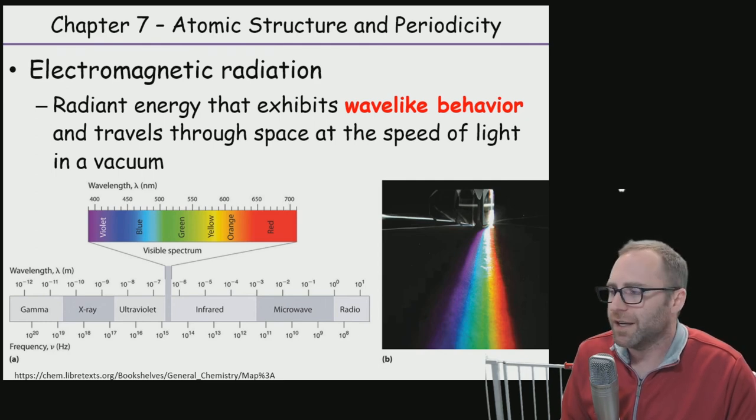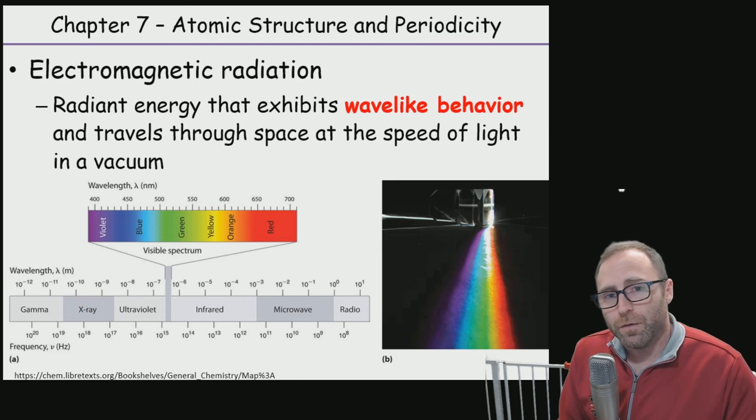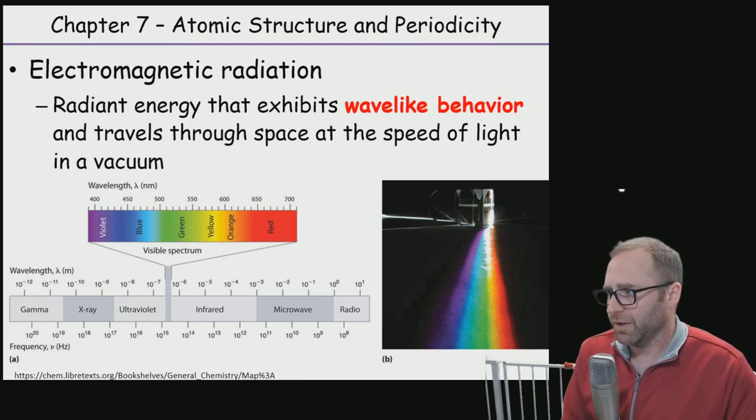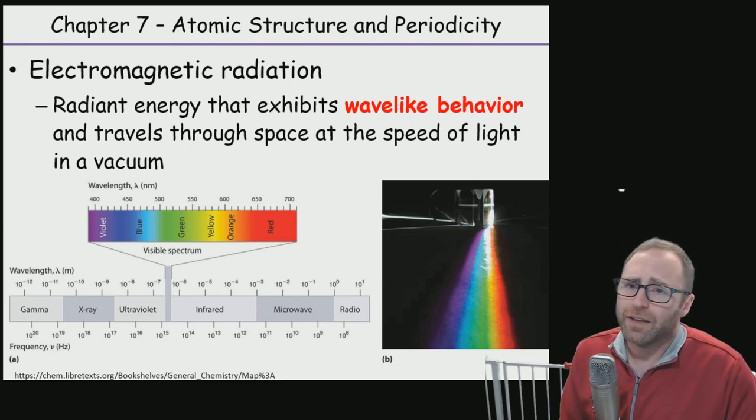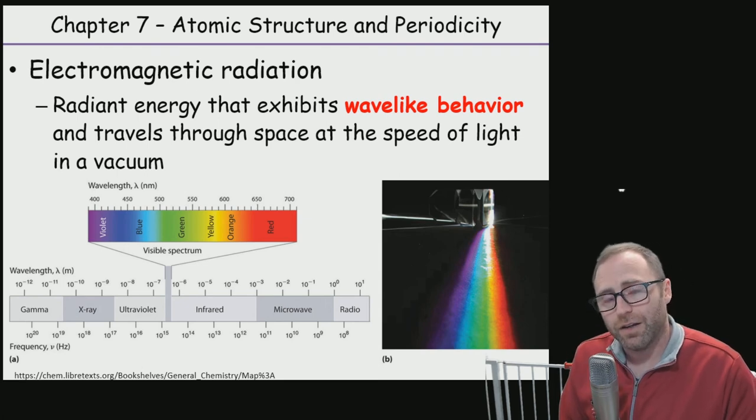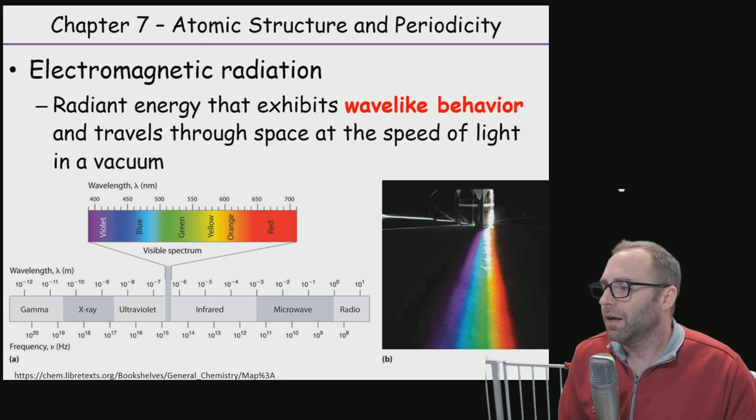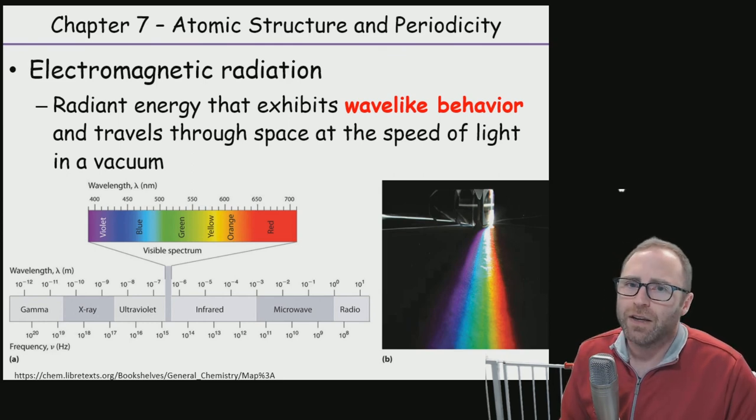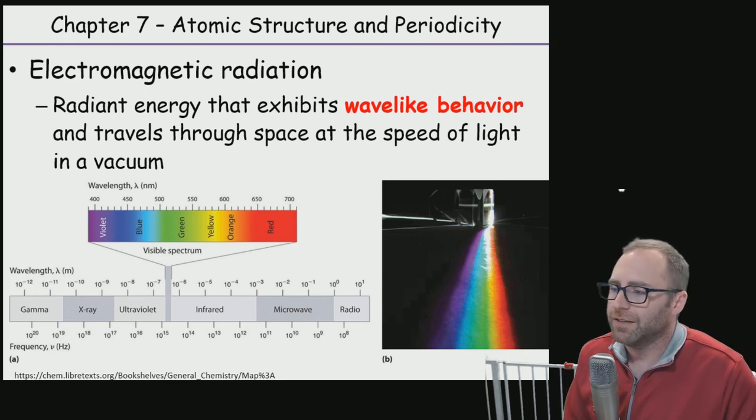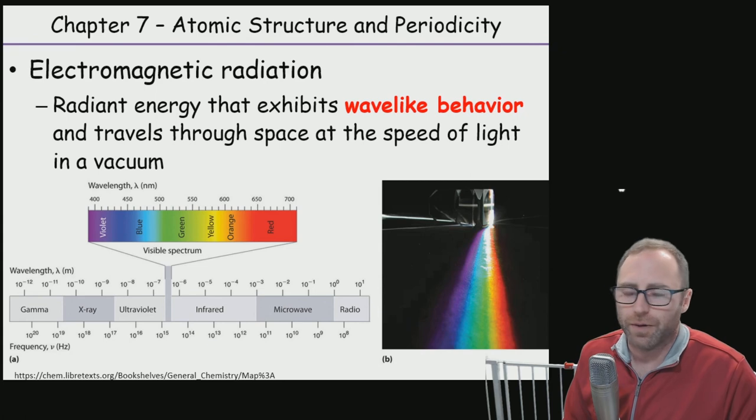Within visible radiation, you have these ROYGBIV designations - the red, orange, green, yellow, blue, indigo, violet kind of stuff. Violet is right up next to the ultraviolet on the spectrum, and red is near the infrared. The image here that we've got is white light being shown through a prism. If you take white light and hit it with a prism, you can actually diffract all the different colors in the rainbow from it.